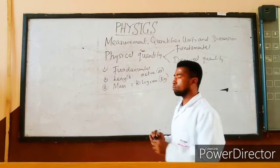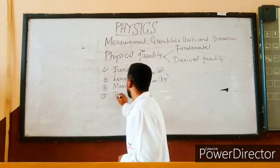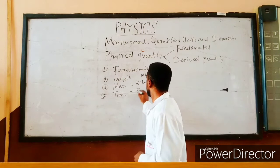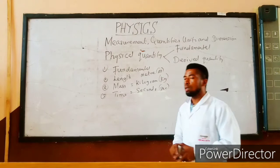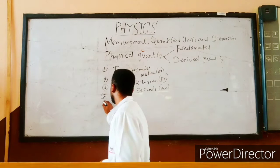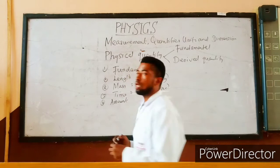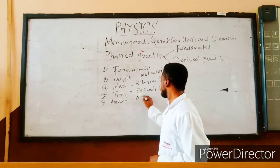The next fundamental quantity is time. Time is measured in seconds. But there are other fundamental quantities — these are not the only ones. We also have number four, which is called amount, or number of moles. Amount is also a fundamental quantity and it is measured in moles.